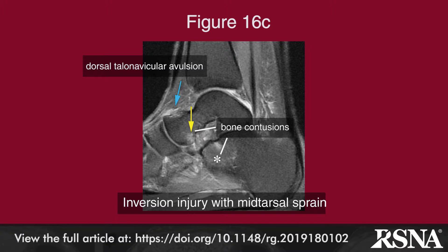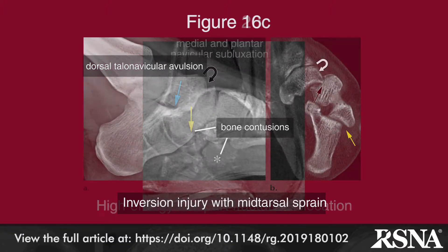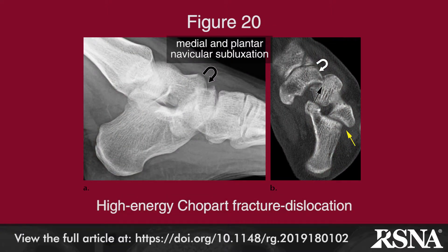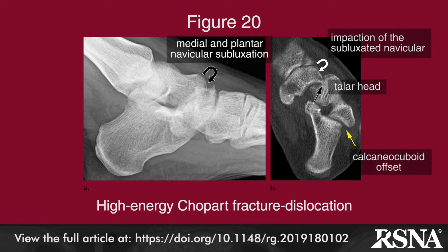Chopart fracture dislocation typically results from vertical load injuries, such as fall from a height or motor vehicle accident, with the diagnosis often delayed owing to associated life-threatening traumatic injuries.